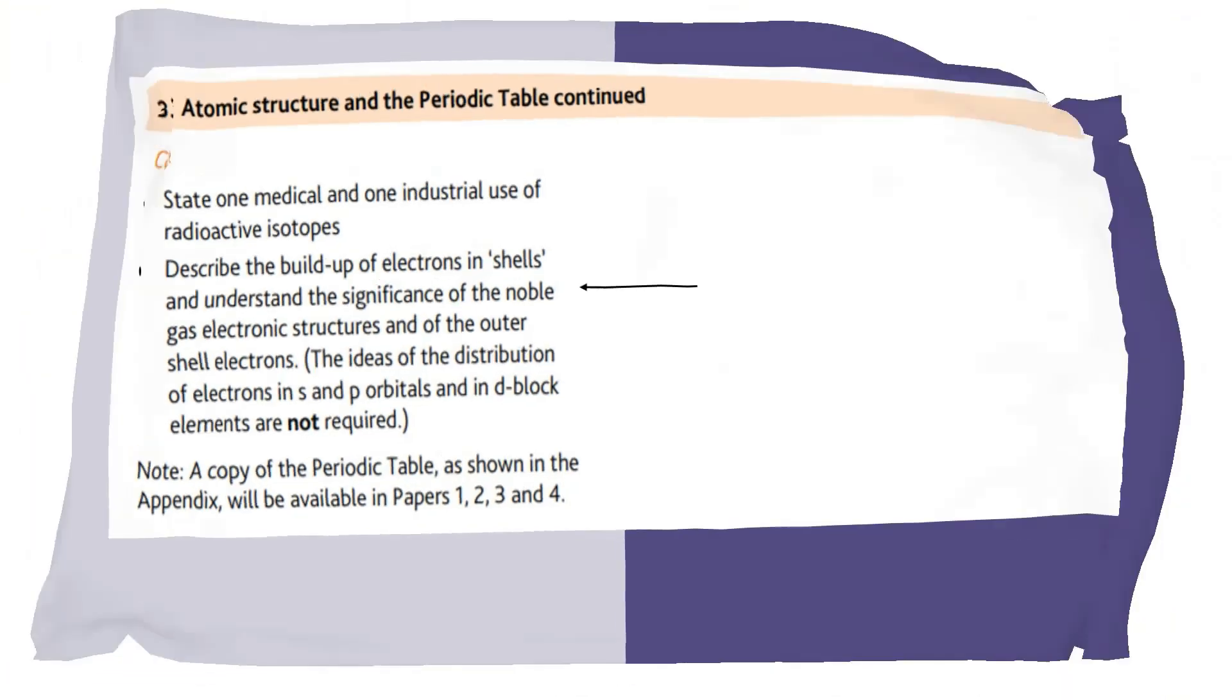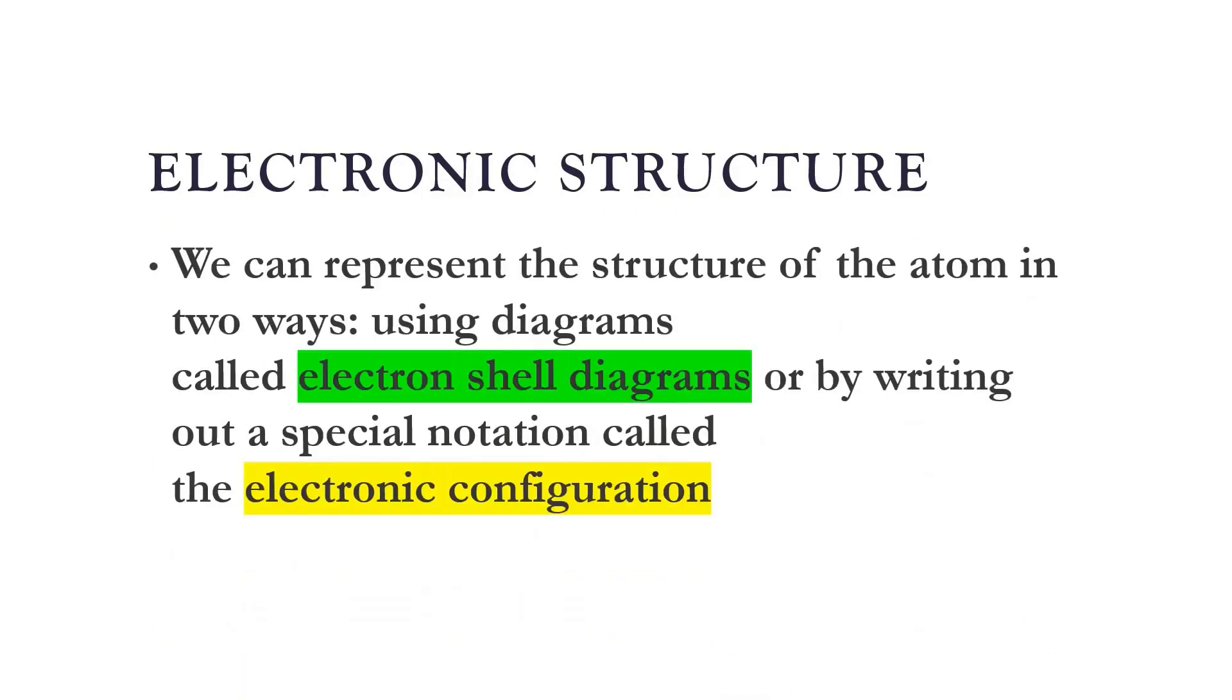Moving on to the topic: electronic structure. We can represent the structure of an atom in two ways. Either we can use diagrams, specifically electron shell diagrams, or we can write out a special notation called the electronic configuration. You may have heard this word several times.